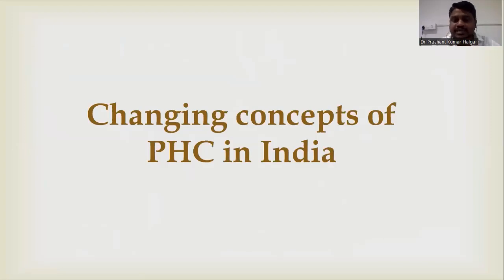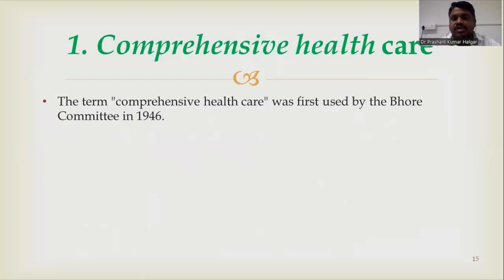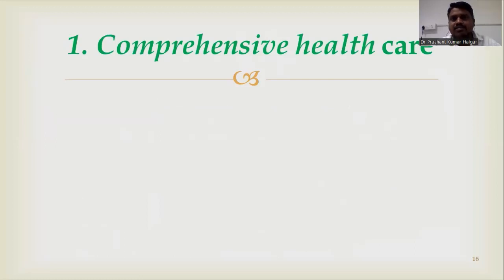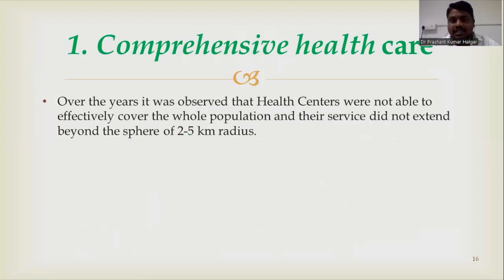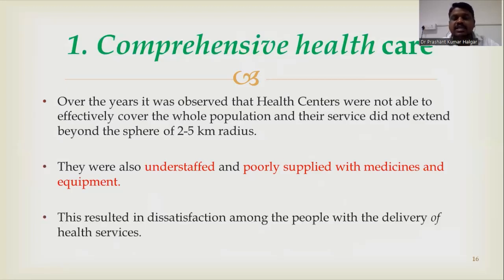The concept of primary healthcare evolved through changing ideas in India. First came comprehensive healthcare, a term first used by Sir Joseph Bhore in his Bhore Committee report of 1946. He stated that by providing comprehensive services — preventive, curative, and promotional — from womb to tomb across a defined geographical area, people can be healthy. However, this failed because health centers could not serve beyond a 2–5 km radius, and most centers were poorly staffed, lacked medicines and equipment, resulting in dissatisfaction with health service delivery.